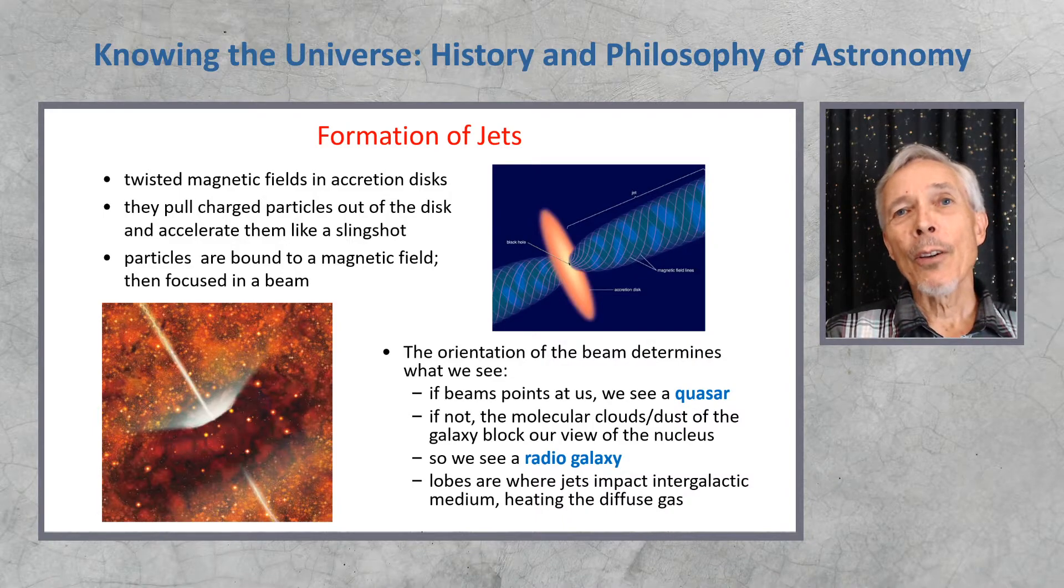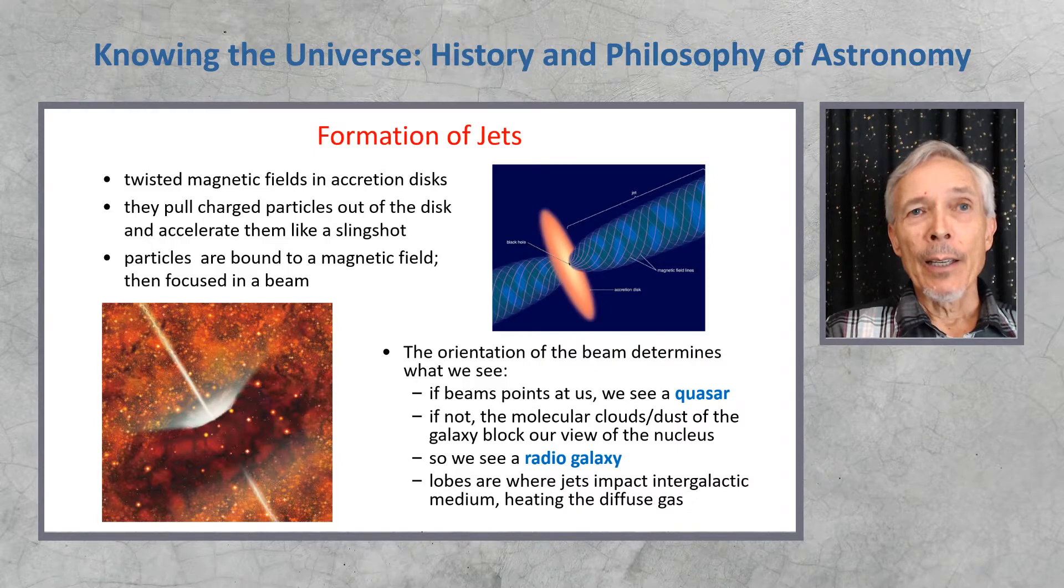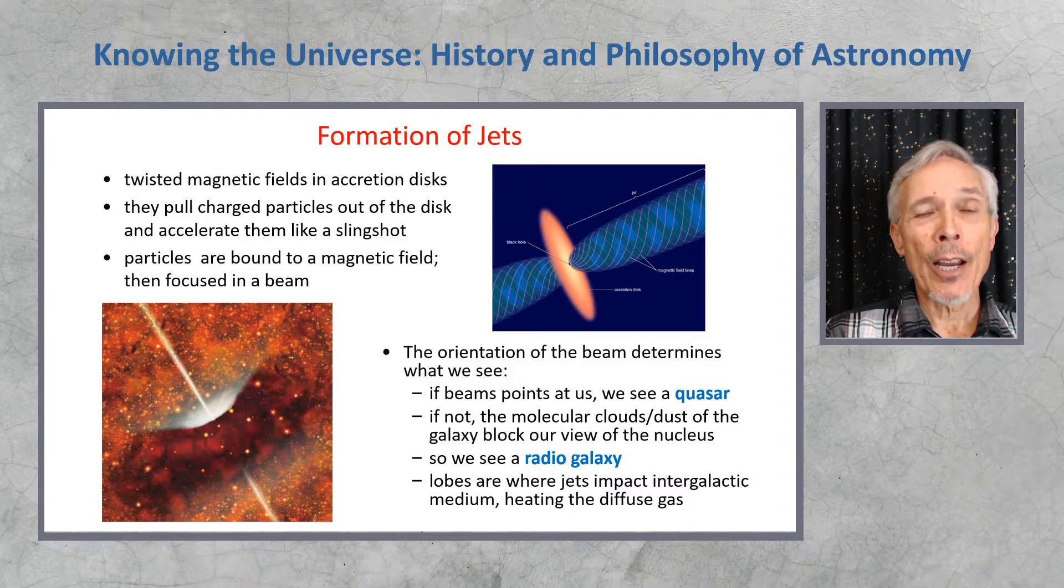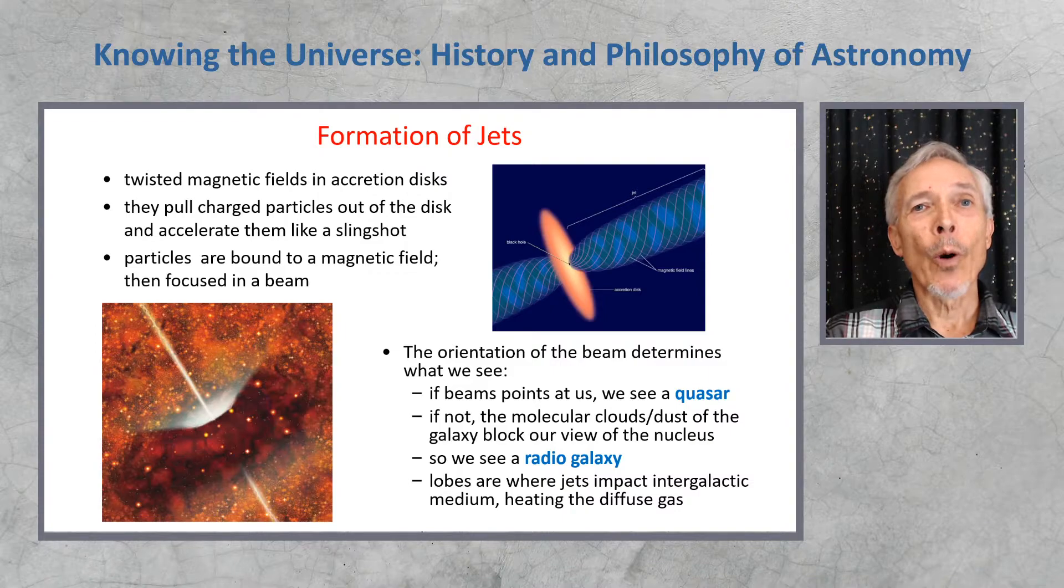The orientation of the beam of this jet of emission determines what we see. These things, these galaxies, are randomly oriented in the sky, and so occasionally we will be looking right down the jet. If this jet points at us, we see its emission boosted relativistically into our telescope, in our line of sight, and we see what's called a quasar.